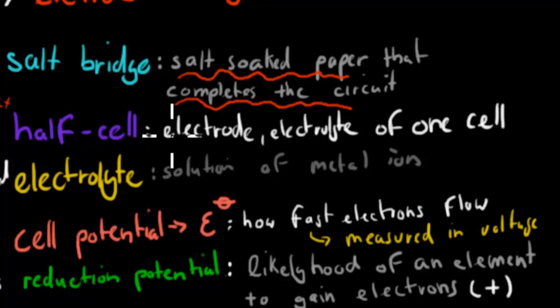We have our half cells. So the electrode and electrolytes of one cell makes a half cell. We have two half cells to make up the Galvanic cell. So copper and copper solution plus zinc and zinc solution. Each of those is a half cell. And together they make the Galvanic cell.